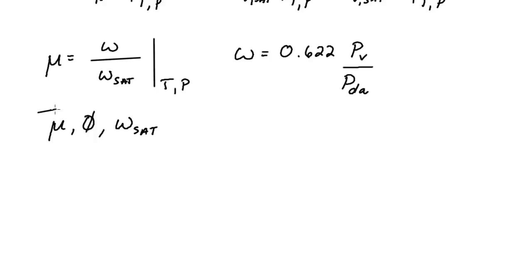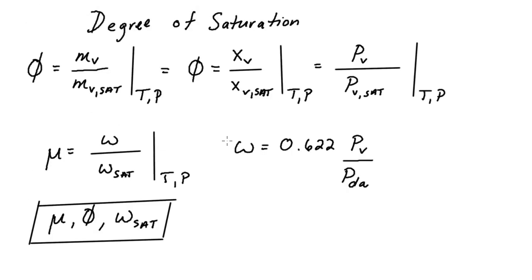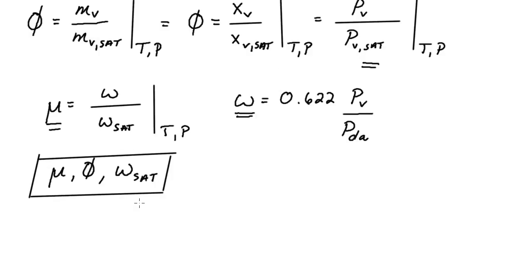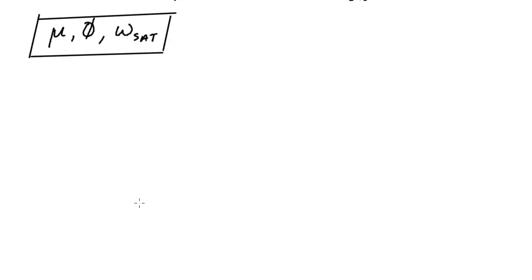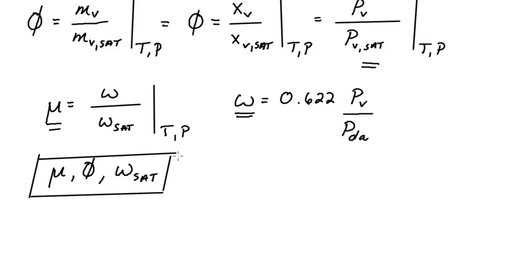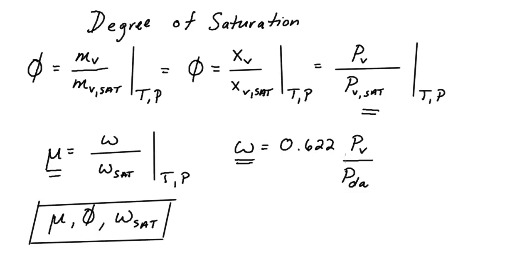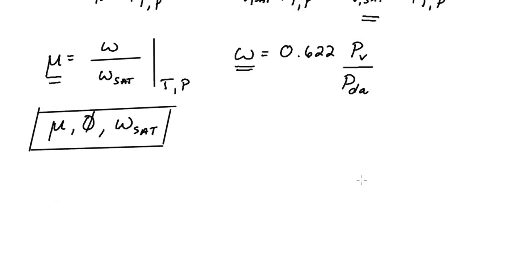We want a useful relationship between mu, phi, and omega saturation. We'll combine the equations, starting with pressures. This is covered in ASHRAE Fundamentals, but they glaze over how it's done, so it's a useful exercise to go through the algebra. Let's begin with the humidity ratio and replace the partial pressure of dry air with the total pressure. So omega is equivalent to 0.622 times the partial pressure of the vapor divided by the total pressure minus the partial pressure of the vapor.